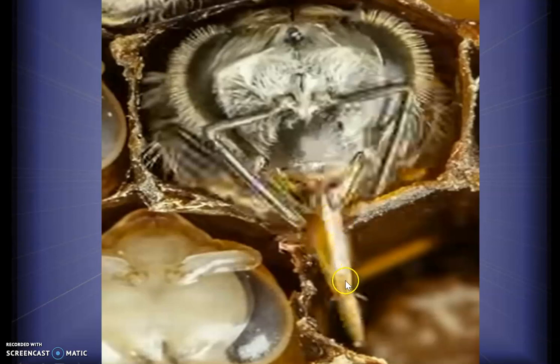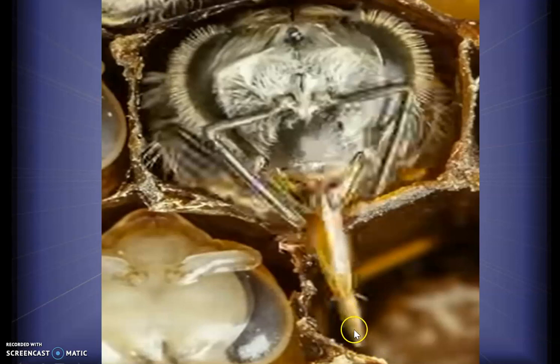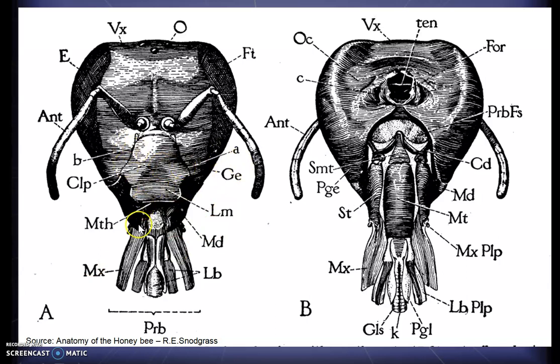This figure shows the proboscis being extended out. The combination of the maxilla and the lower lip together forms a structure we call the proboscis. This acts like a tubular structure in which the labium — the lower lip — is modified. The tip, called the labellum, is inserted into the flower or nectar and drawn into the mouth. The upper lip and mandibles are seen at the front of the head.